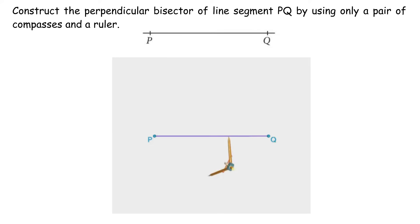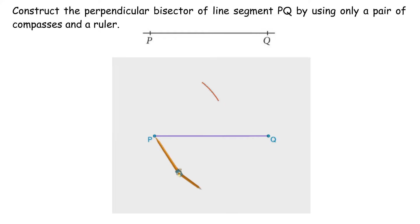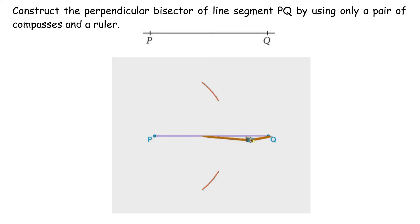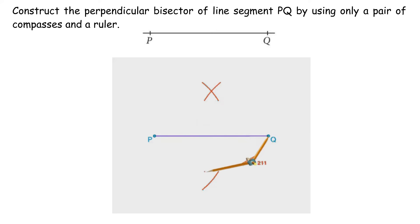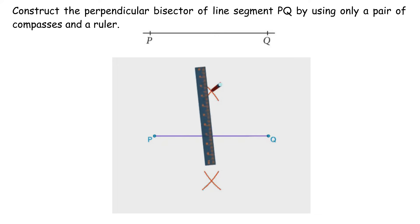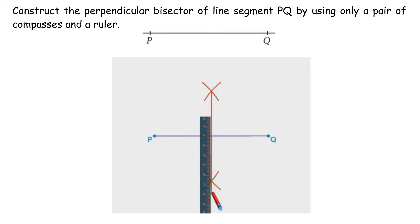1. Place the compass at one end of line segment, point P. Adjust the compass to slightly longer than half the line segment length PQ. 2. Draw arcs above and below the line PQ. 3. Without altering the distance on the compass, draw two arcs from the other end, point Q, one above and one below PQ. 4. Draw a line joining the points of intersection of the arcs constructed.